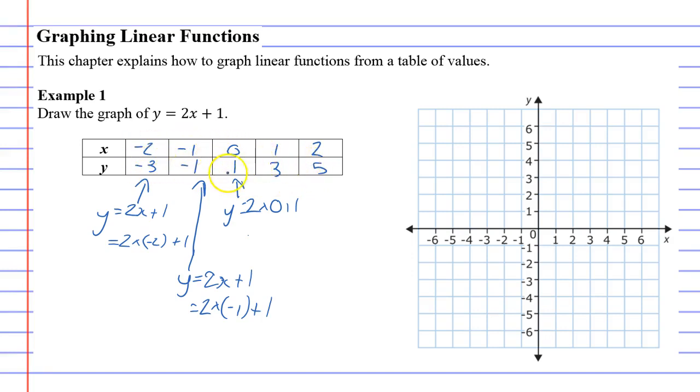Once you've filled in your table, you then go to your x and y axis. And what you'll notice in the very first column, we'll do this one in red. In the very first column when x is negative 2, y is negative 3. So we pick on our x line negative 2 and then on our y line negative 3. So negative 2, negative 3, and we just put a little dot.